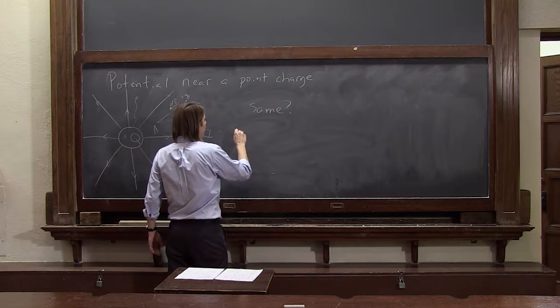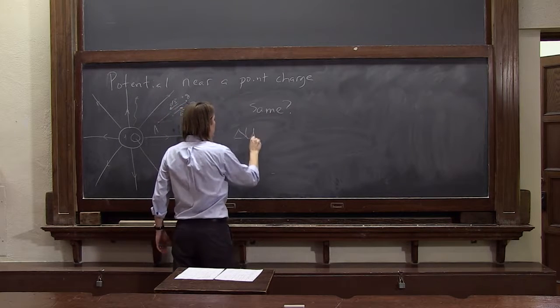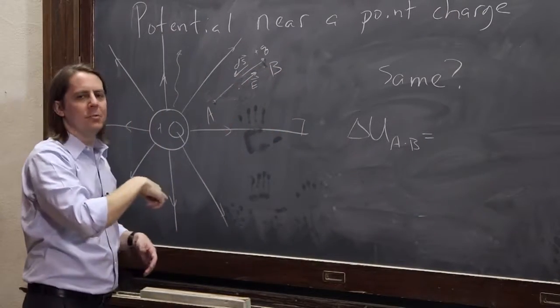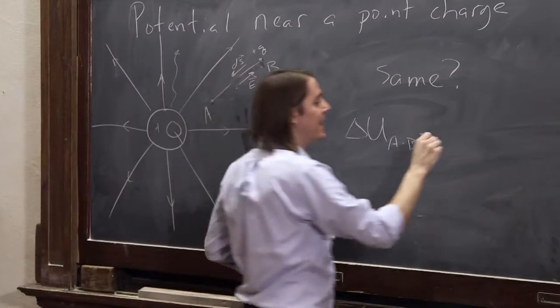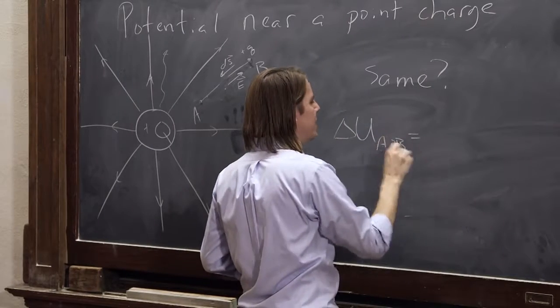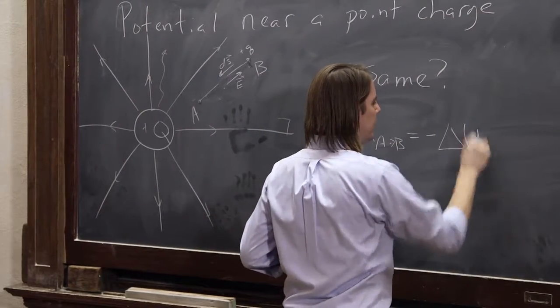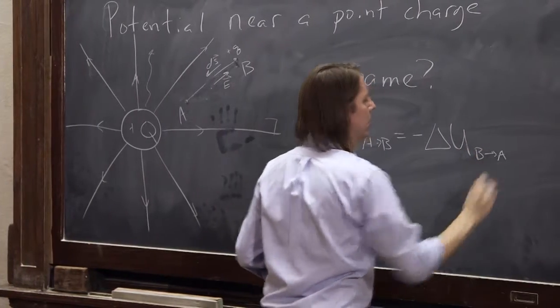We said, we know that we have delta u, we went a to b. And you know that if you go one way or the other way, they should be the opposite of each other. They should be negative of each other. So delta u a to b should equal negative delta u b to a.